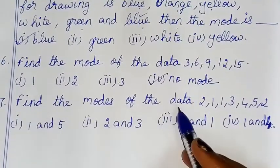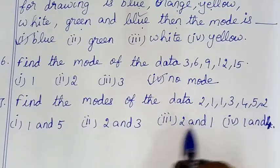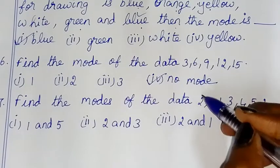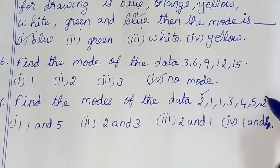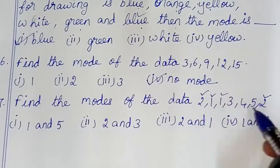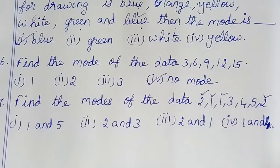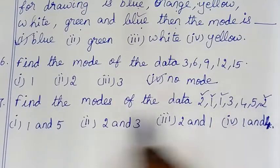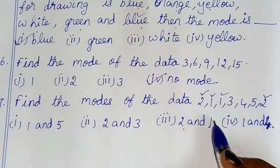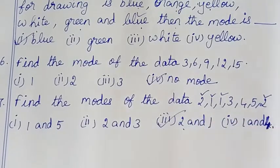Find the modes of the data: 2, 1, 1, 3, 4, 5, 2. Both 2 and 1 each repeat 2 times. So both are modes. The modes are 2 and 1 — that is the correct option. Thanks for watching, children.